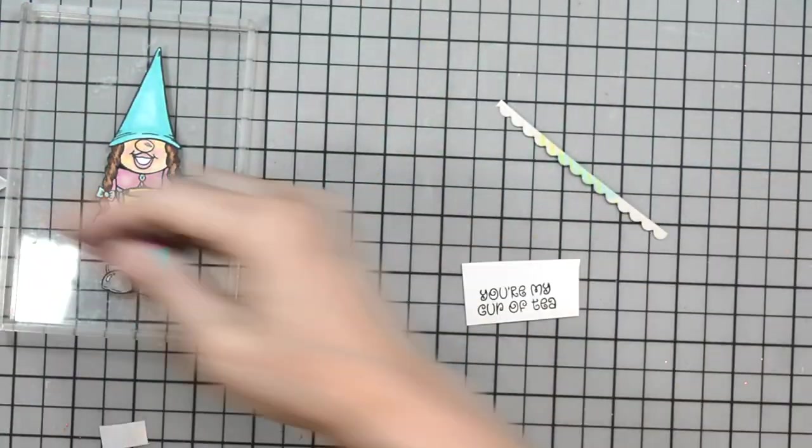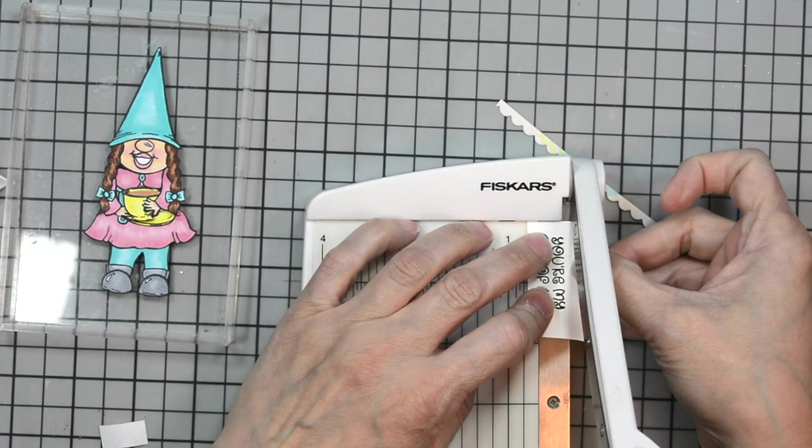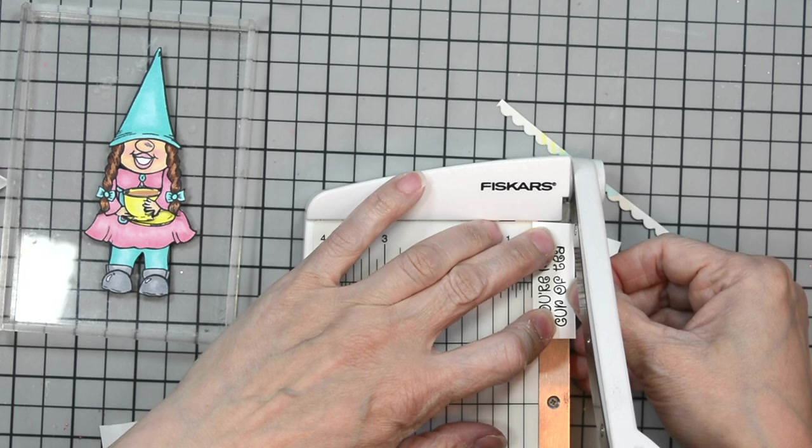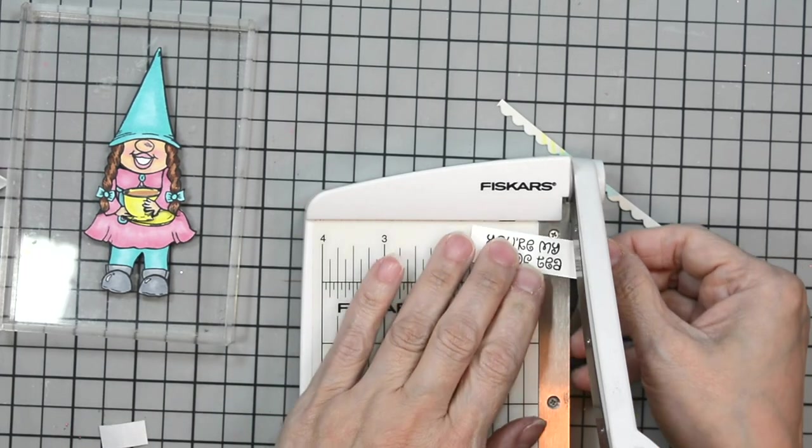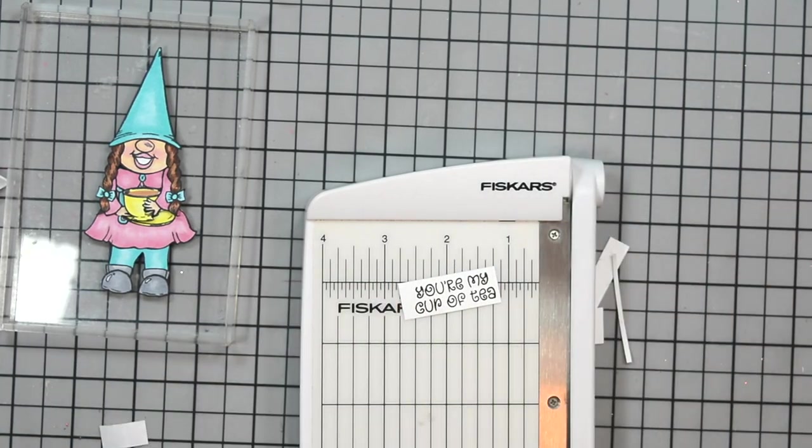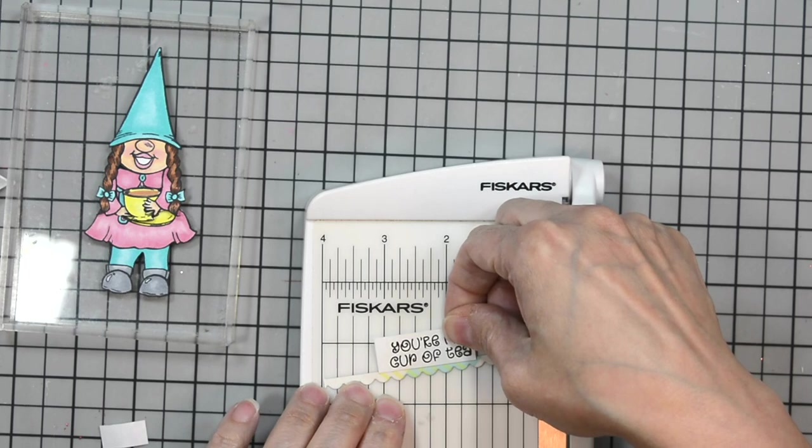I'm going to set her to the side. Now I'm going to grab our sentiment and trim this down. I did this on a little scrap of Not Your Mama's cardstock. Any little scraps I have I keep for stamping little sentiments. I'm going to adhere this onto a scrap of our patterned paper.